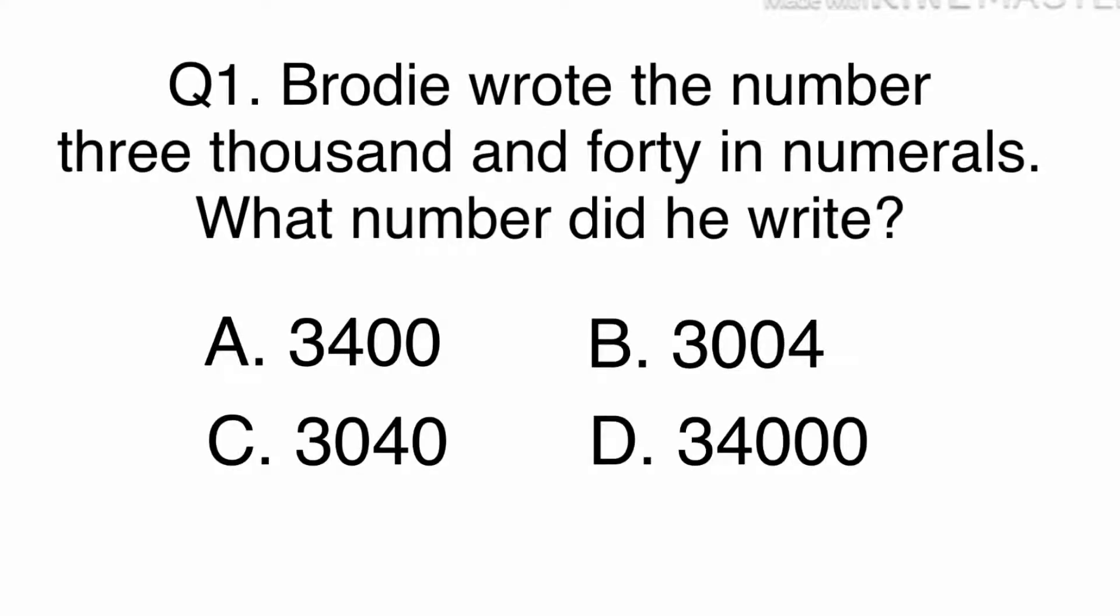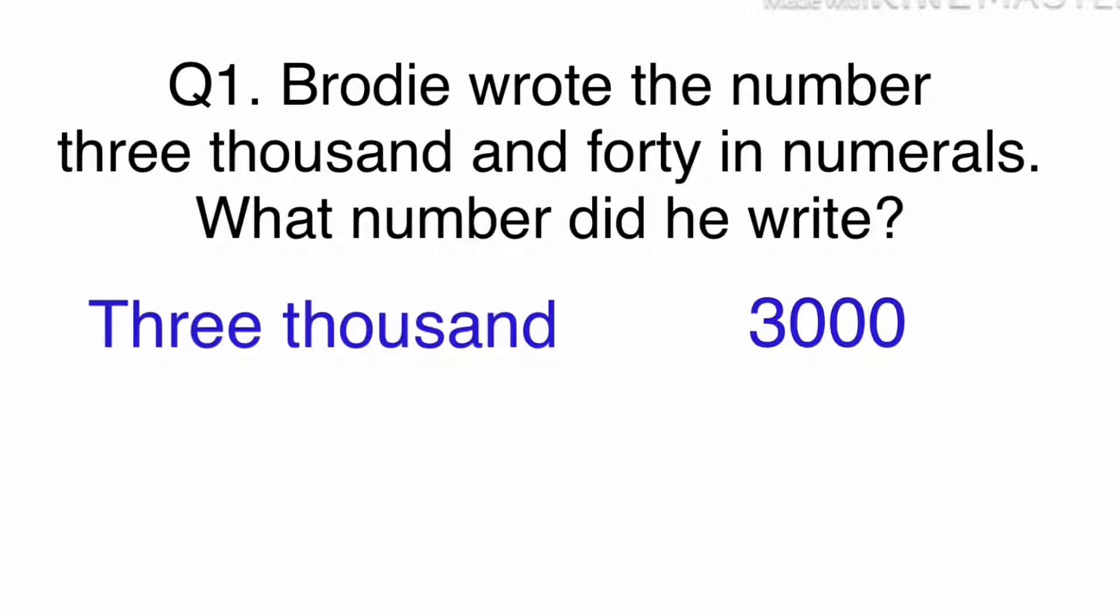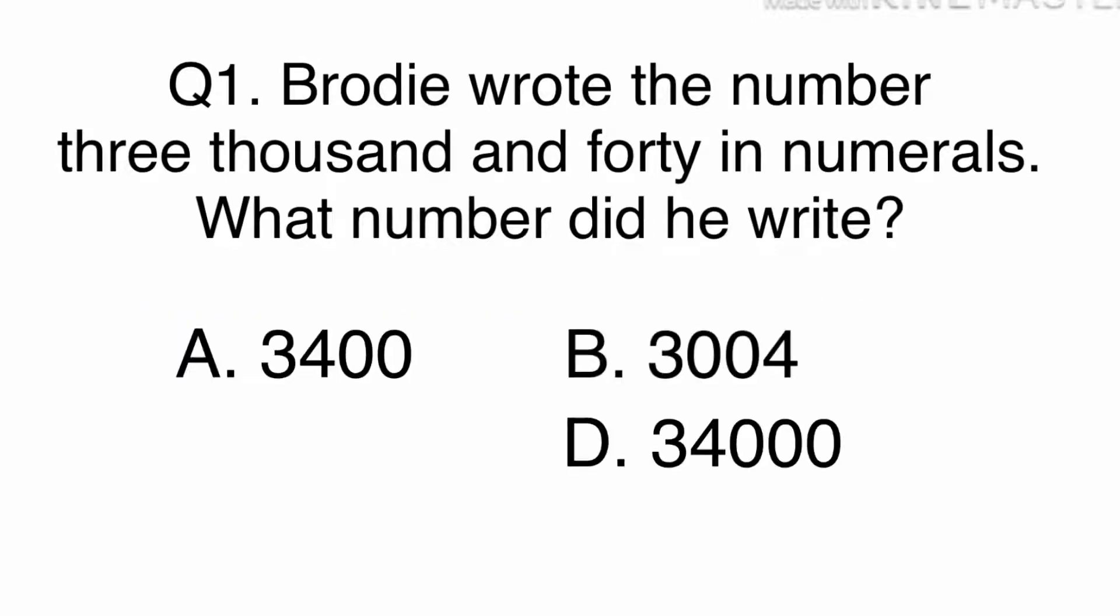Question 1. Brodie wrote the number three thousand and forty in numerals. What number did he write? Simply add 3,000 and 40 together. The answer is C, 3,040.